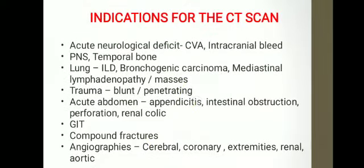What are the indications for the CT scan? The most common indications are acute neurological deficit like cerebrovascular accident and intracranial bleed. For imaging the paranasal sinuses and the temporal bone. In the lung, it is used for imaging interstitial lung disease, bronchogenic carcinoma, mediastinal lymphadenopathy, and lung masses. Trauma is another important indication, be it blunt or penetrating trauma. Acute abdomen in cases of appendicitis, intestinal obstruction, perforation, and renal colic. Other uses include gastrointestinal tract pathologies, compound fractures, and angiographies like cerebral, coronary, extremities, renal, and aortic arteriogram — all of which can be well delineated by CT.